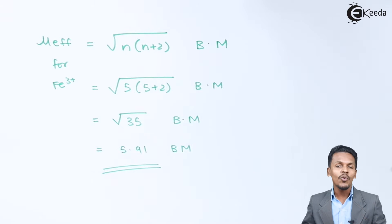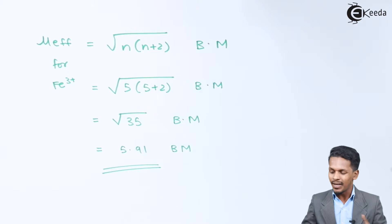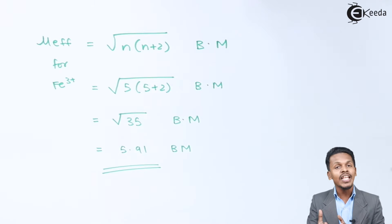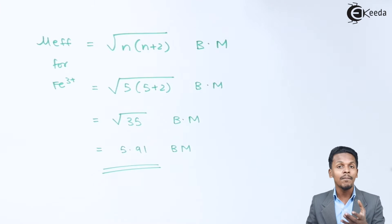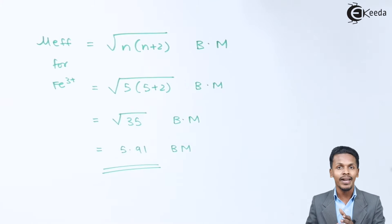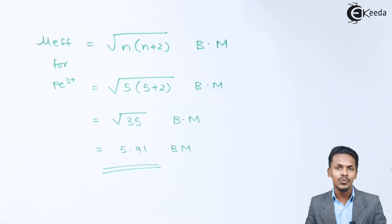This is how we calculate the effective magnetic moment. Based on this value we can also understand whether the compound is paramagnetic or ferromagnetic depending upon the range of the magnetic moment value.